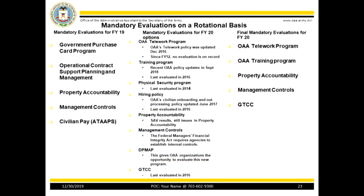Moving forward, the five mandatory evaluations will be chosen on a rotational basis from the programs in the center column. For FY20, the mandatory programs are listed on the right column. All organizations will evaluate the mandatory programs with the exception of the Government Travel Charge Card. RSW is the proponent for OAA and will evaluate that program for all of OAA. Also, you will evaluate at least 20% of your major functional areas. Your evaluation will be based on the results of your risk assessment. Further, if your organization is a proponent for a program, you must evaluate it at that level. For example, SPD is a proponent for Army conferences; therefore, we will evaluate that program at the Army level.